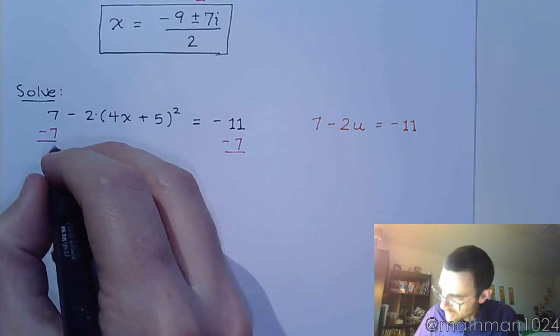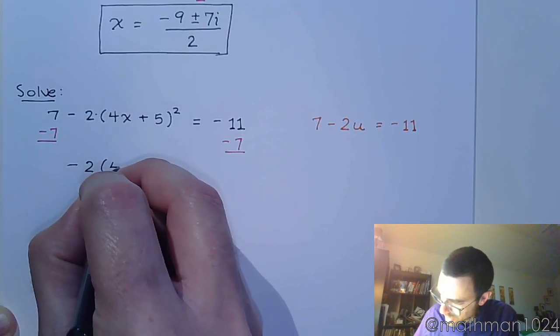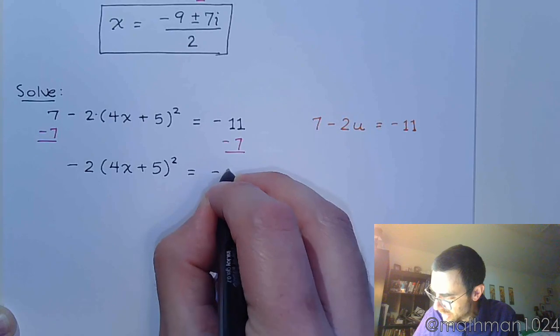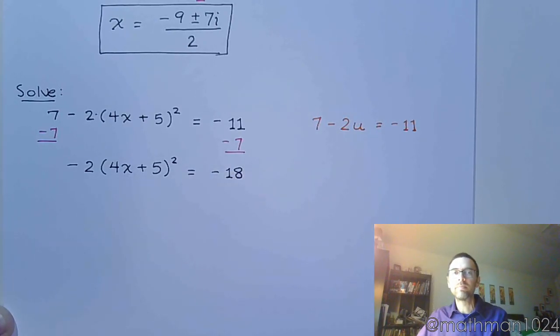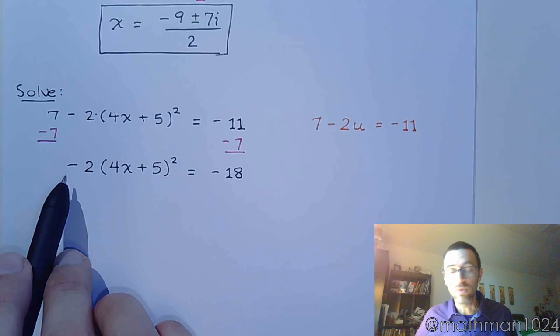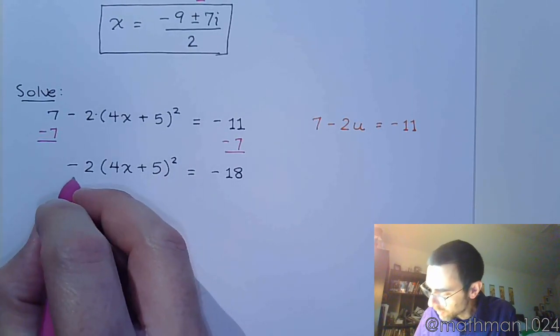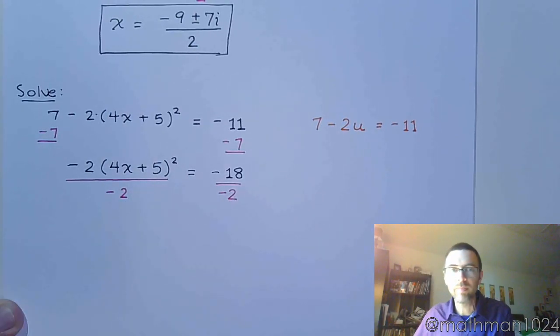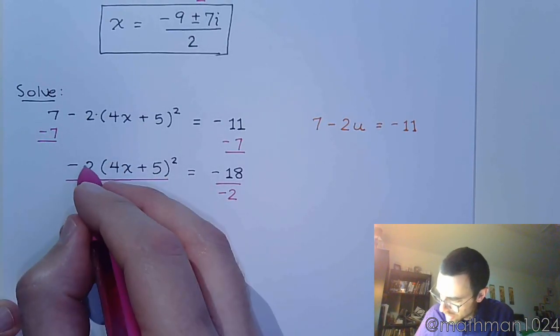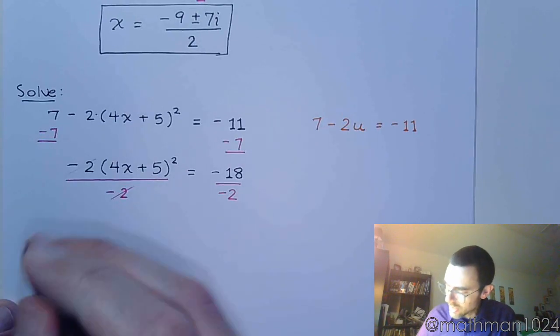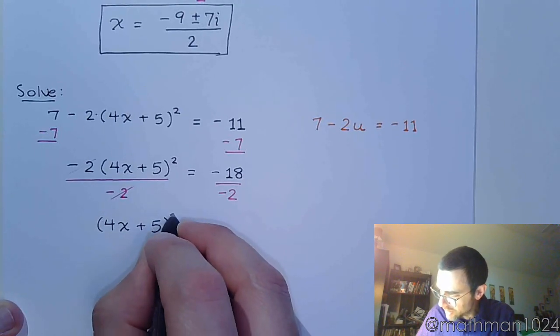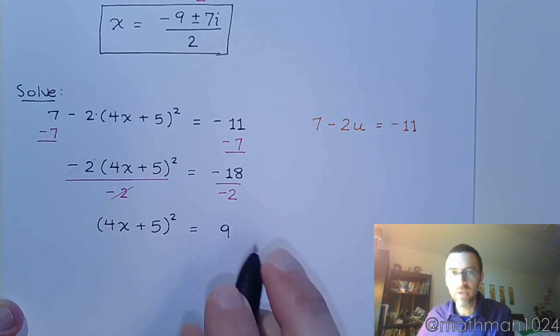Subtract that on both sides. We have -2(4x + 5)² = -18. All right, it's not time yet for the square root property because I still have this coefficient of -2 in front, so I have to undo that by dividing both sides by -2. So now these guys are going to reduce. I have (4x + 5)² = 9, which becomes positive 9.